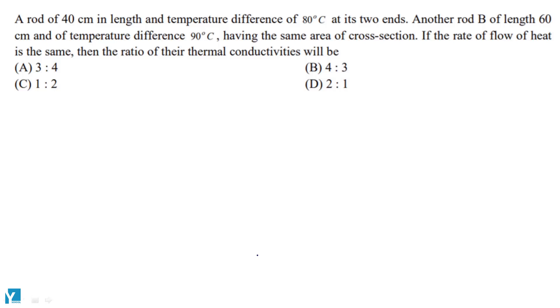A rod of 40 cm in length and temperature difference of 80 degrees Celsius at its two ends. Another rod B of length 60 cm and temperature difference of 90 degrees Celsius, having the same area of cross-section. If the rate of flow of heat is the same, then the ratio of their thermal conductivities will be.